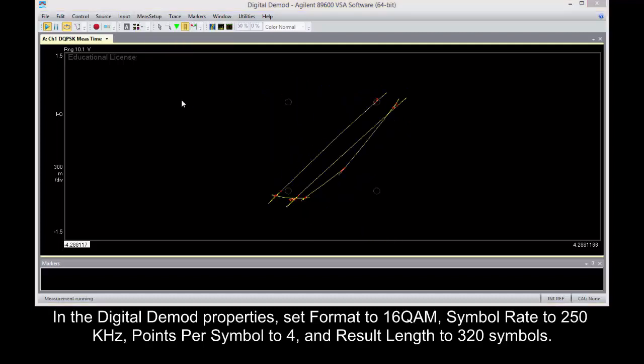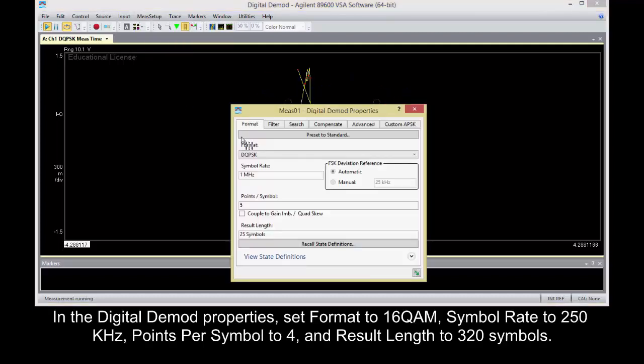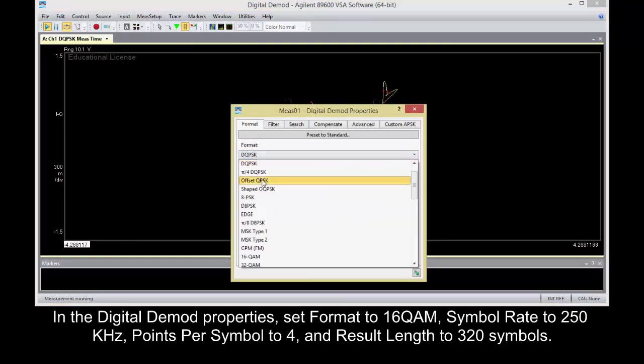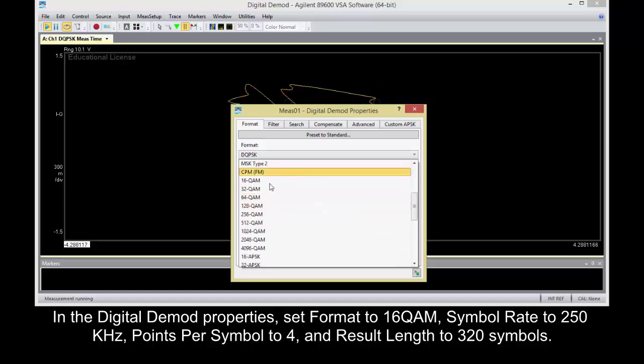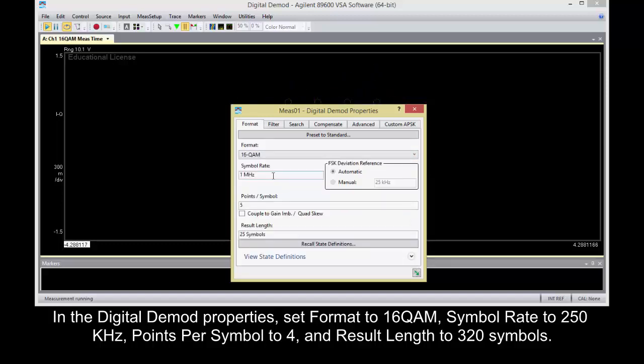In the digital demod properties, set Format to 16QAM, Symbol Rate to 250 kHz, Points Per Symbol to 4, and Result Length to 320 symbols.